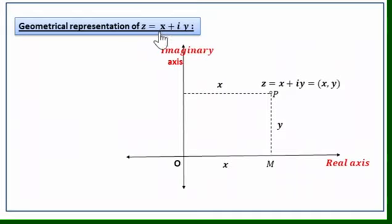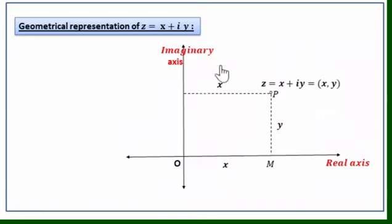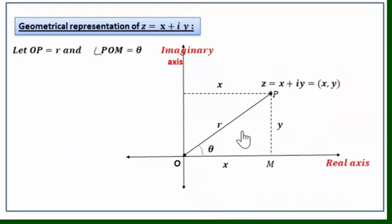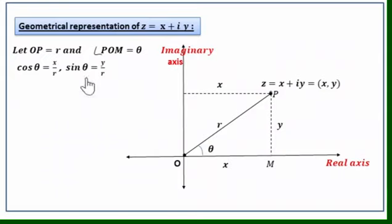Next, we represent the complex number z = x + iy on a complex plane. A complex number z = x + iy is represented by the point (x, y) in the Cartesian coordinate plane, the x-y plane. The x-axis is called the real axis, the y-axis is called the imaginary axis, and the plane on which complex numbers are marked as points is called the complex plane. Let OP = r and θ be the angle made by OP with the positive real axis.